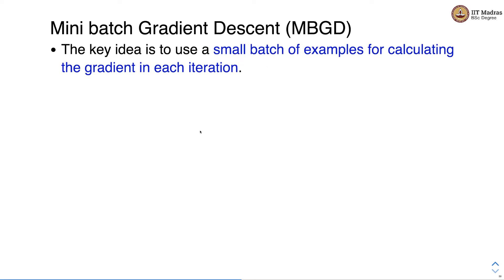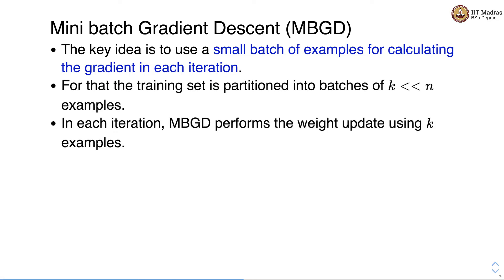The key idea is to use small batches of examples for calculating the gradient in each iteration. For that, we first partition the training set into batches of k examples, where k is typically much smaller than n. We normally use k as a power of 2 — a number closer to a power of 2 — which helps us get optimal disk performance while reading the training set from disk.